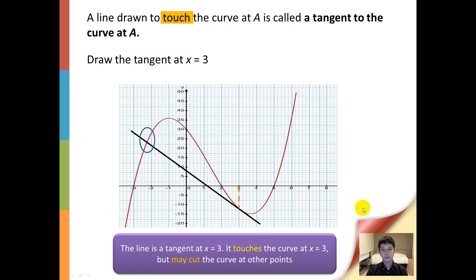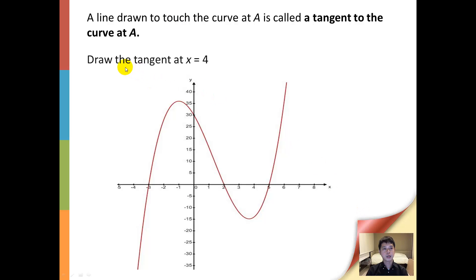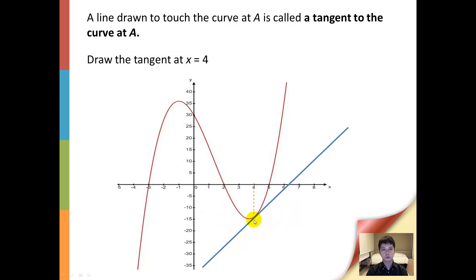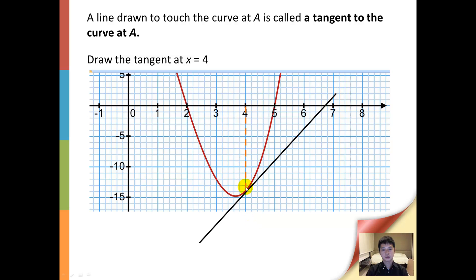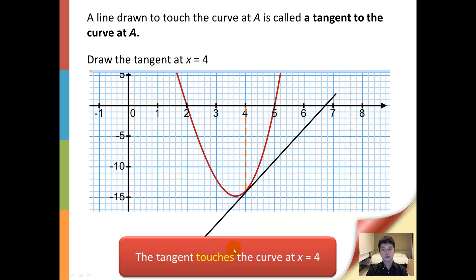Now for a better understanding of tangents, let us look at another example. Here we are asked to draw the tangent at x equals 4. At x equals 4, we have these points on the curve, and the tangent will touch the curve at these points. Now let us zoom into this area to see how the tangent looks like. Since the tangent touches the curve at only one point here, x equals 4, this is acceptable.